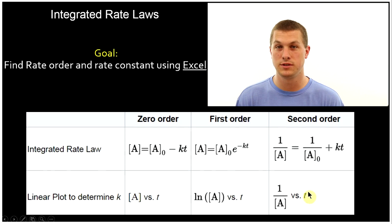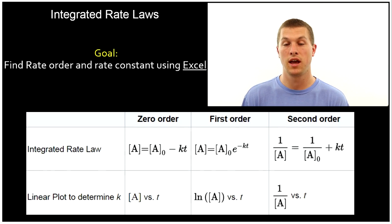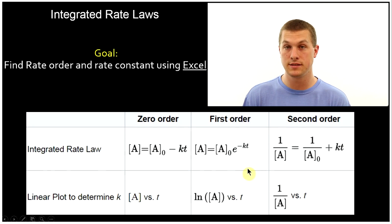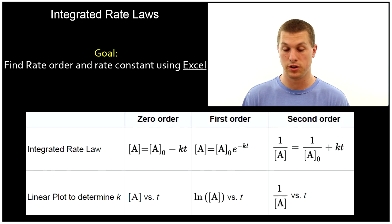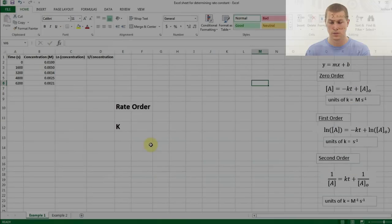This is how you can use Excel to determine the rate order and rate constant of chemical reactions. You need a dataset of concentrations at different times. Let's go ahead and look at doing this in Excel.